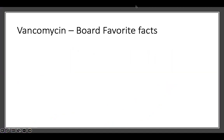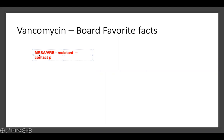Vancomycin is a very interesting antibiotic. It's used for really big infections like MRSA or VRE. Basically, these are our resistant pathogens. And remember, on infectious control, these usually have contact precautions — just to remind you.